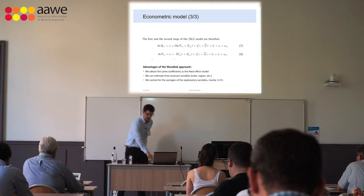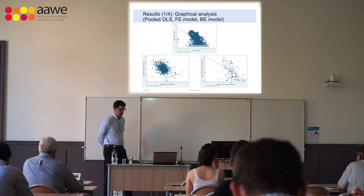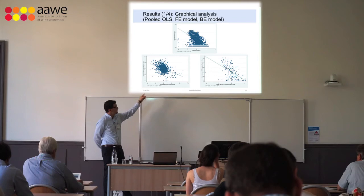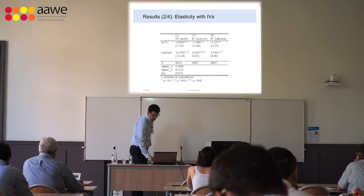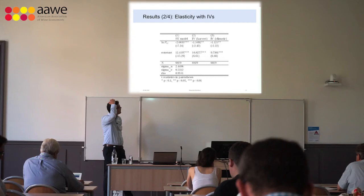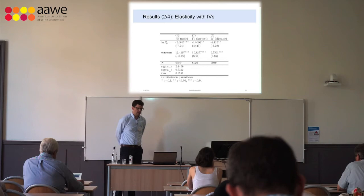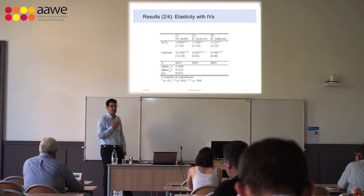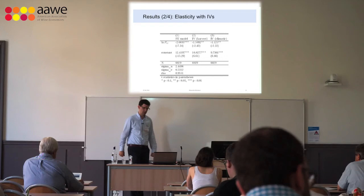Looking at the graphical results, we compare the pooled OLS model, the fixed effects, the within estimator, and the between effects model. For the fixed effect model, we find minus 2. With the IV strategy using harvest and climatic instruments, we find a lower price elasticity — around minus 1.5.